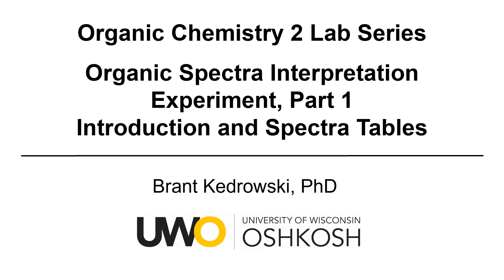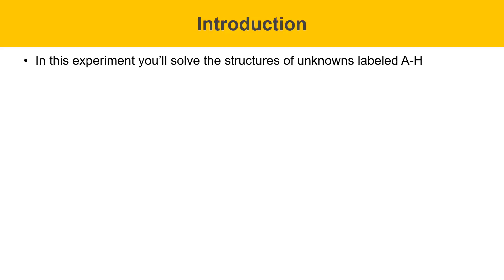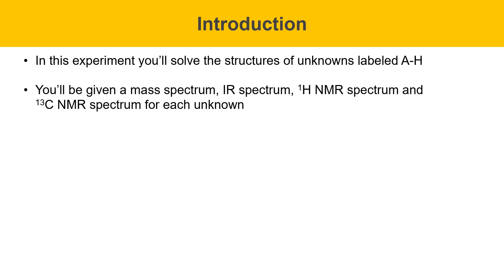This experiment assumes you have some prior knowledge of NMR spectroscopy, IR spectroscopy, and mass spectrometry from your lecture course or other videos. It'll focus on putting these different aspects together and solving unknowns with multiple spectra. In this experiment, you'll solve the structures of several unknowns labeled A through H. You'll be given a mass spectrum, an IR spectrum, a proton NMR spectrum, and a carbon-13 NMR spectrum for each unknown.